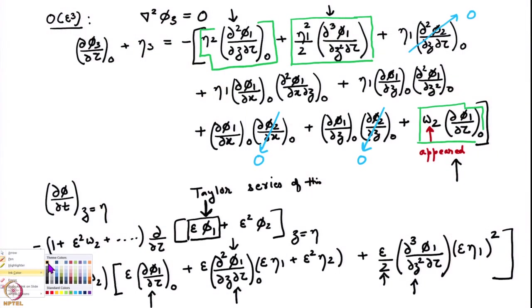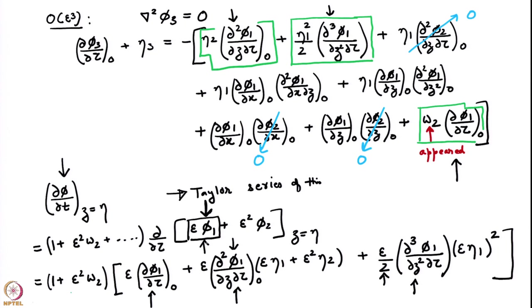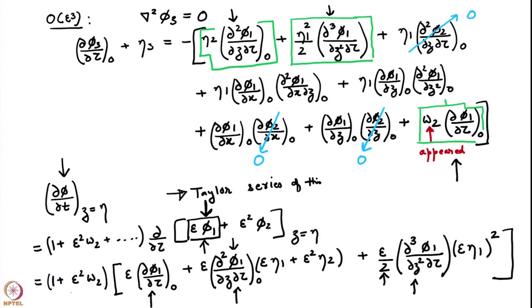I had written down one term which was in the Bernoulli equation in its primitive form before we did the expansion. This would be ∂φ/∂τ at z equal to eta. I had done the transformation and written the perturbative expansion, and we had got up to here. Whatever I have written in the last line of the slide has come from the Taylor series expansion of just this term. Now let us understand where these 3 green boxed expressions are coming from — first the expression which contains omega_2.